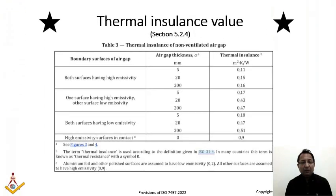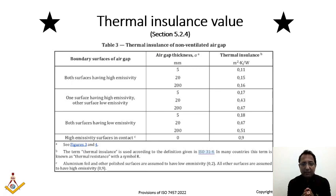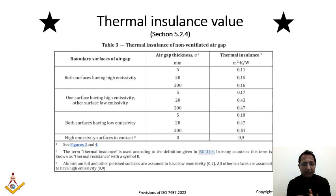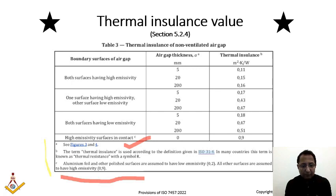This table from ISO 7547 covers thermal insulation values — specifically the air gap thermal insulation for boundary surfaces. It gives the thermal insulation value corresponding to each air gap thickness; for example, an air gap of 5 mm gives a specific thermal insulation value. Notes in the table clarify details for aluminum foil and polished surfaces. You can use these values for the respective air gap thermal insulation calculations.